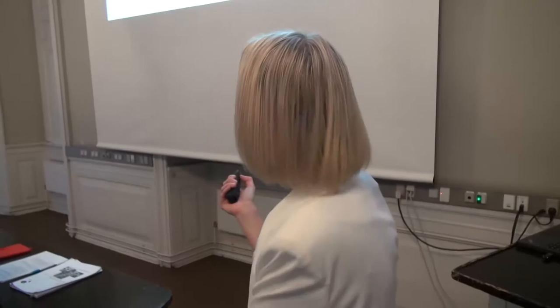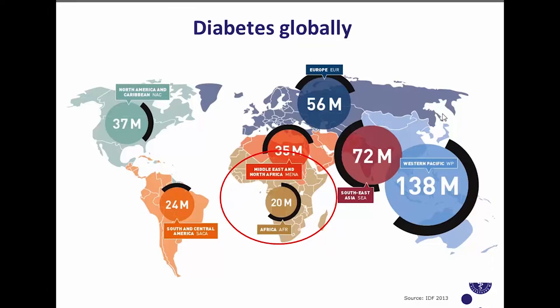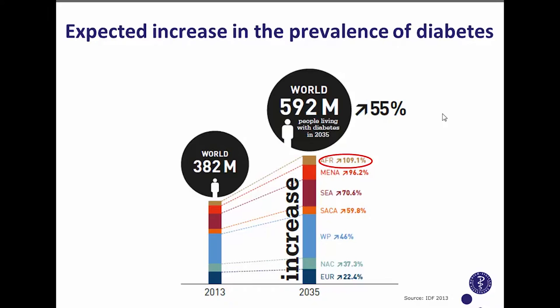If we look at the distribution of people with diabetes across the world, we can see that sub-Saharan Africa actually has the lowest amount of people having diabetes, but it's also in this region that we have the highest amount of people with undiagnosed diabetes. And if we look at the expected increase in prevalence within the next 20 years, the highest relative increase will take place in this region.